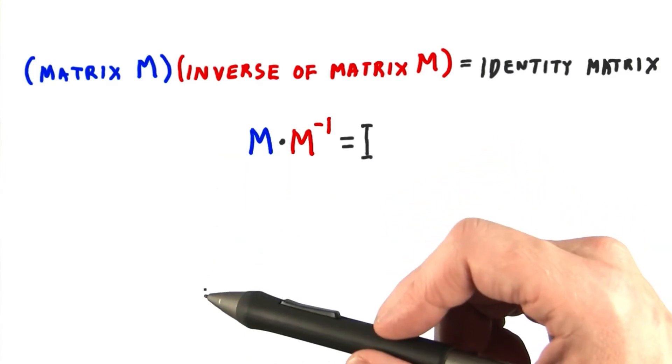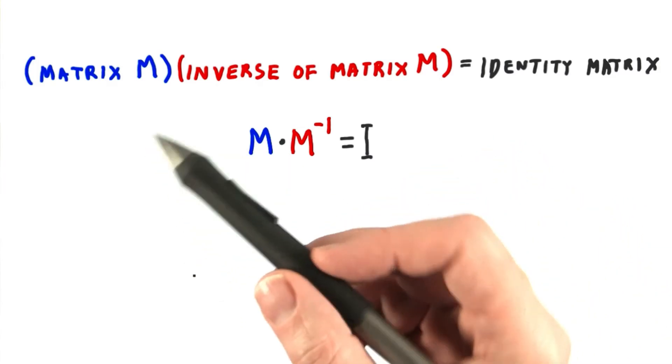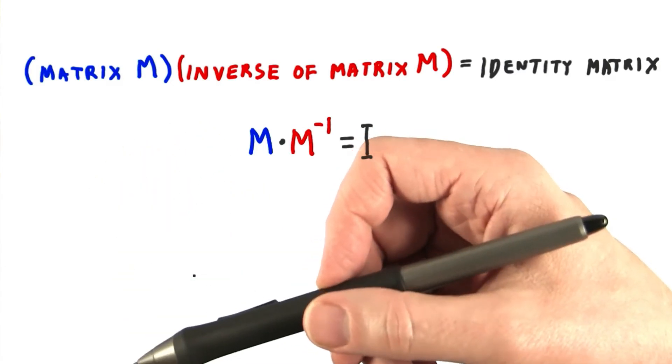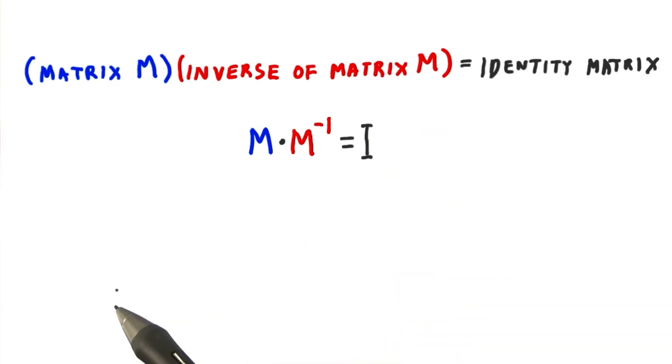the inverse moves it 5 units down. The inverse of a rotation matrix is one that rotates on the same axis but back the other direction. The inverse of a scale matrix scales the object back down.